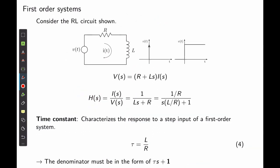Let's get into more detail by considering an RL circuit example with two inputs: a step input and an impulse input. Through Kirchhoff's law, we find an expression relating current and voltage. Rearranging, we find the transfer function, which can be written as a first-order transfer function in standard form by dividing numerator and denominator by R. From the standard form, we get the time constant τ that characterizes the response to a step input of a first-order system.